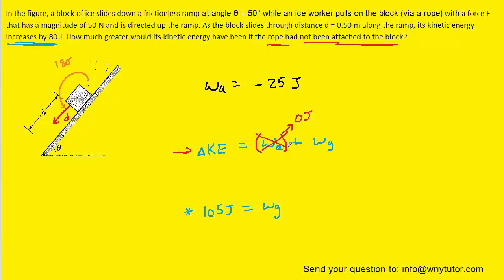So, we'll cross off this term. So, that means that we can simplify the equation and just let the change in kinetic energy equal the work done by gravity.